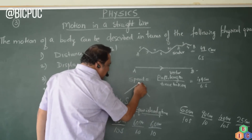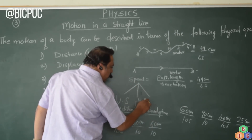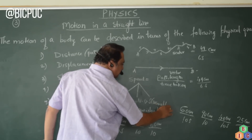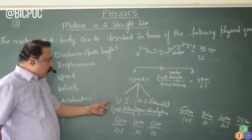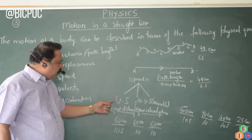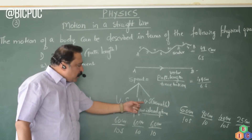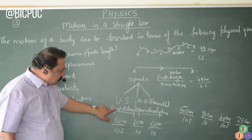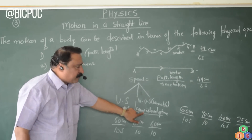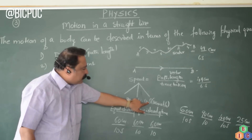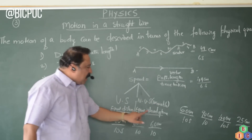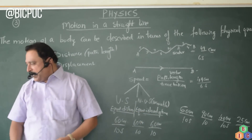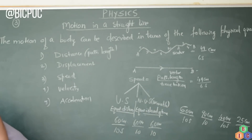If the particle does not cover equal distance in equal intervals of time, then such a speed is called non-uniform speed or variable speed. To summarize: uniform speed is when a particle covers equal distance in equal intervals of time. Non-uniform or variable speed is when a particle does not cover equal distance in equal intervals of time.